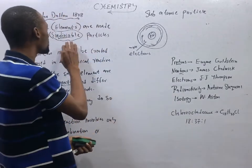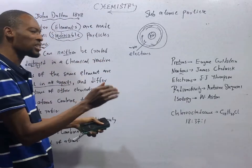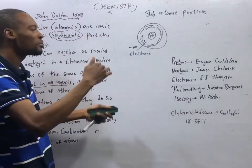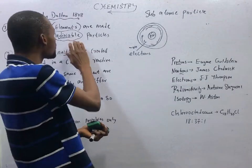Therefore, atoms are divisible. They have other sub-particles. They are not the smallest indivisible particles. So we prove this wrong.